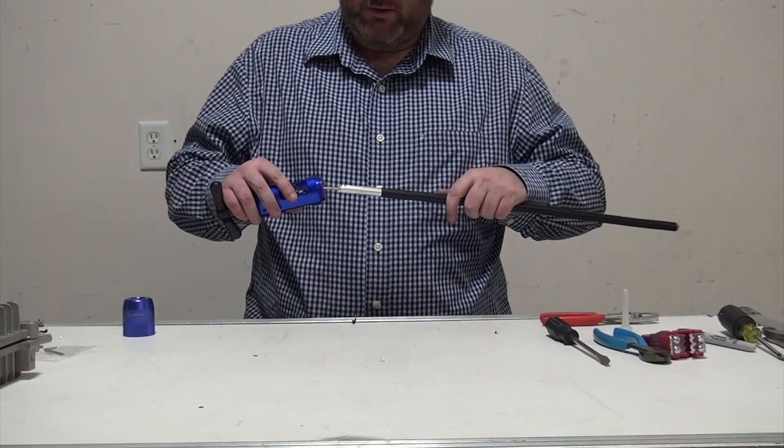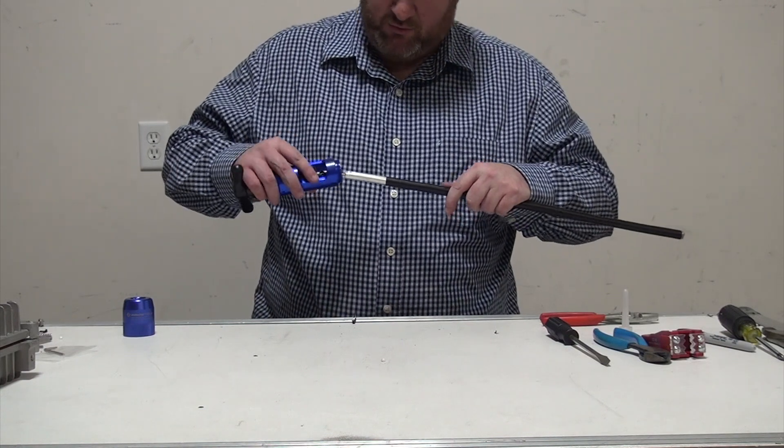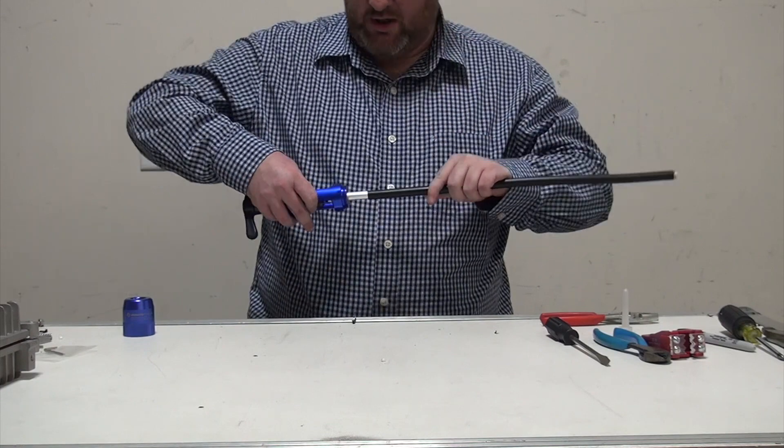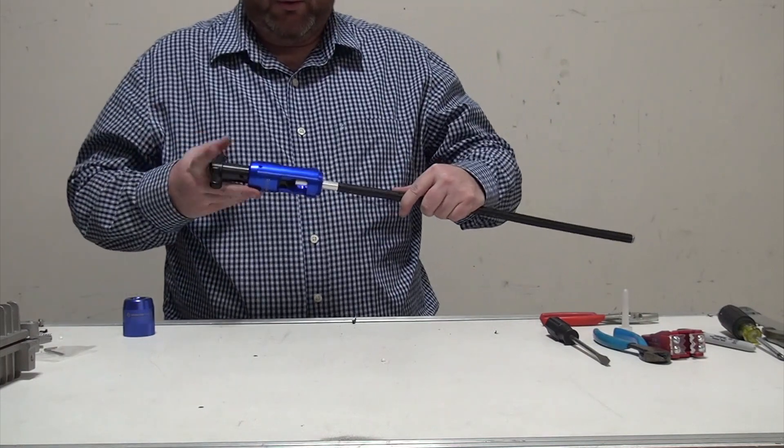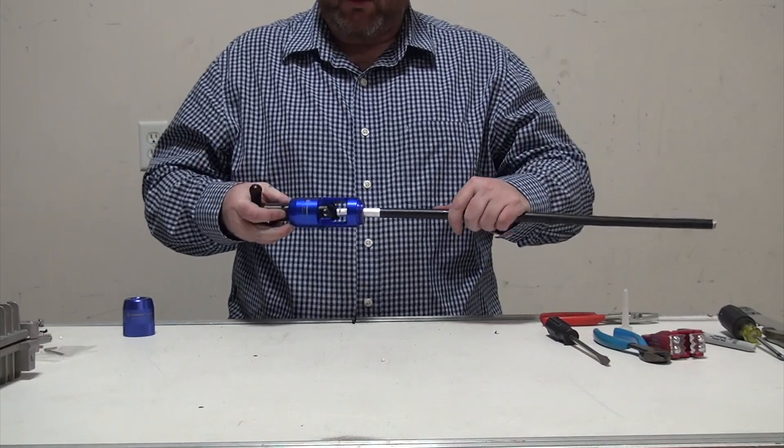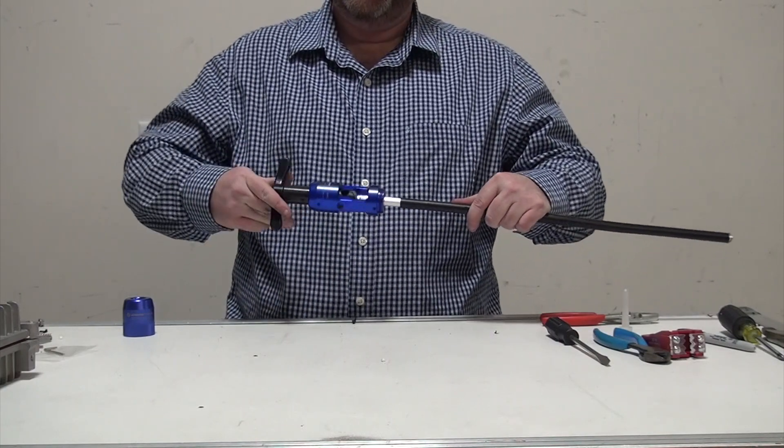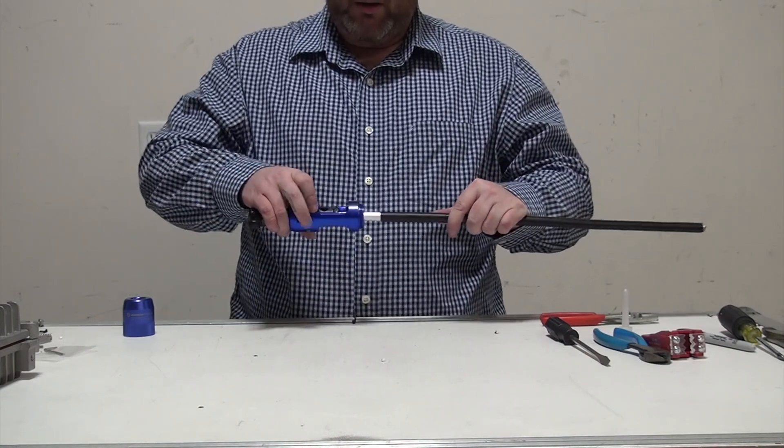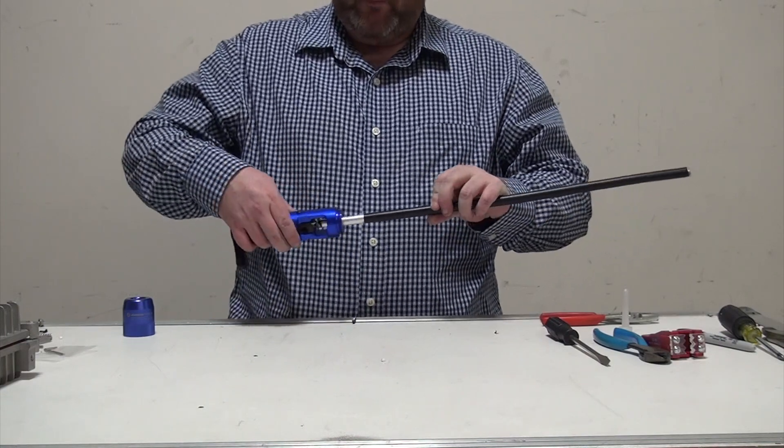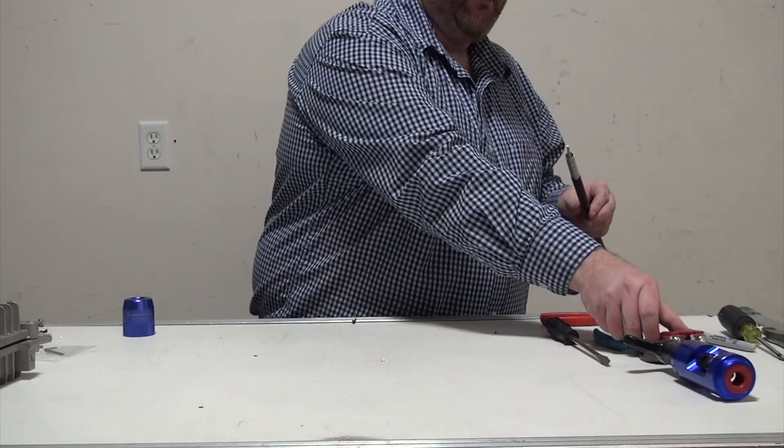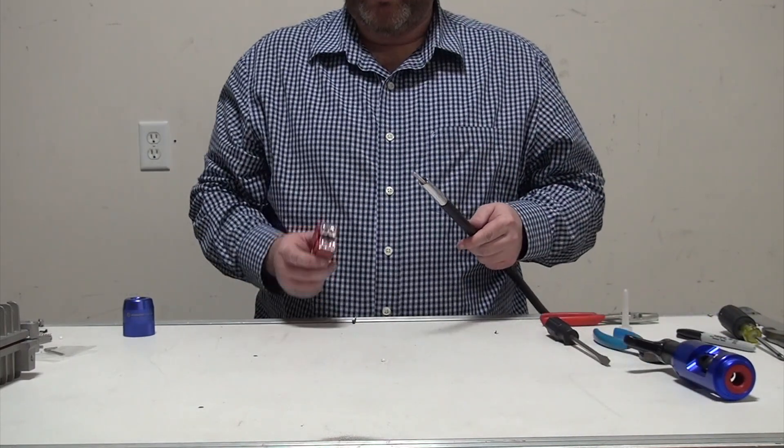Now that the cable is stripped, we're going to go ahead and core it with our coring tool. This is the Jonard HJS coring tool. What we're going to do is insert the cable and begin to core it. When it is properly cored, you can take it back out and you will have your almost prepared cable.